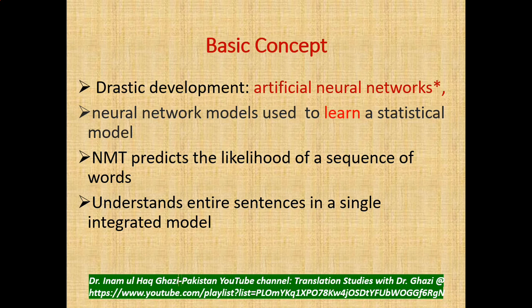Neural networks models are used to learn a statistical model, and neural machine translation predicts the likelihood of a sequence of words — just like the human brain, when we hear someone talking and our mind automatically predicts how they are going to finish their sentence. It understands the entire sentence in a single integrated model, whereas prior phrase-based statistical models understood the sentence in parts.